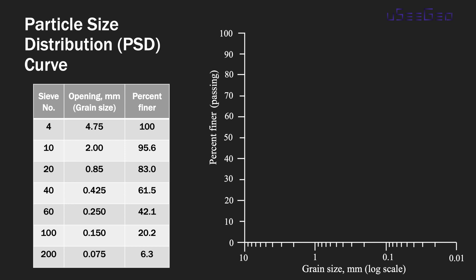Here we are going to take results of these analysis methods and plot them in what we call a particle size distribution curve. To illustrate this, I'll take an example. The table shown is a typical set of results from a sieve analysis. The first column is the sieve number, and for each sieve you know the corresponding opening in millimeters, which is the grain size plotted on the curve. The last column is the corresponding percent finer for each opening size.